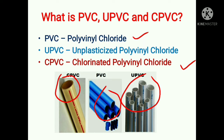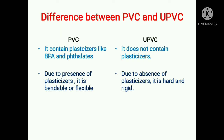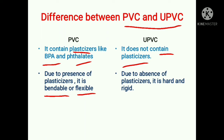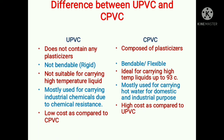Now let's see the basic difference between PVC and UPVC. PVC pipes contain plasticizers like phthalates and BPA. These plasticizers make PVC pipes bendable and flexible. Whereas UPVC pipes do not contain plasticizers, so due to the absence of plasticizers, UPVC pipes are hard and rigid — they do not have flexible properties. This is the basic difference between PVC and UPVC.